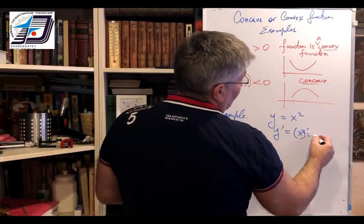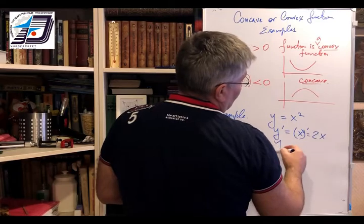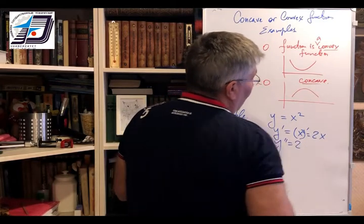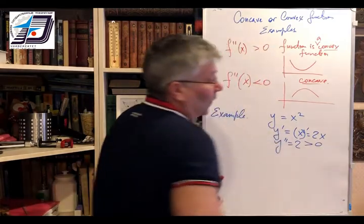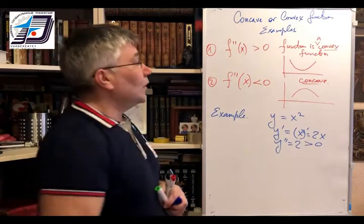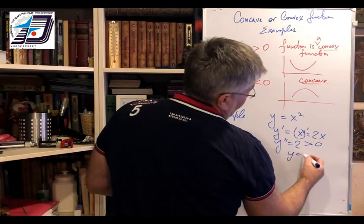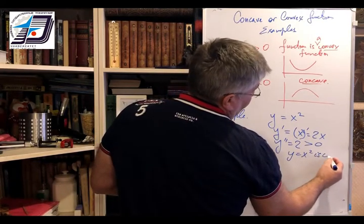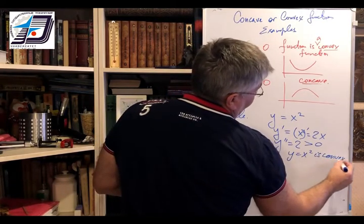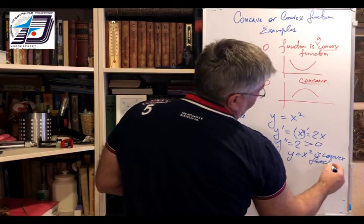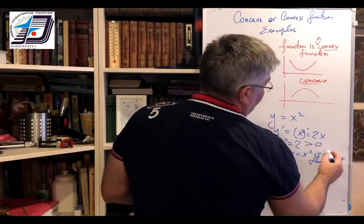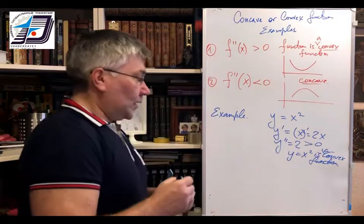The first derivative is 2x and the second derivative is 2. You can see that 2 is always positive, since that this function is always a convex function.